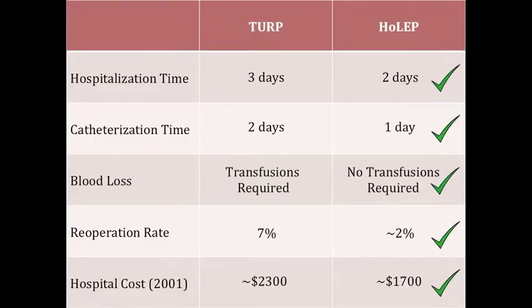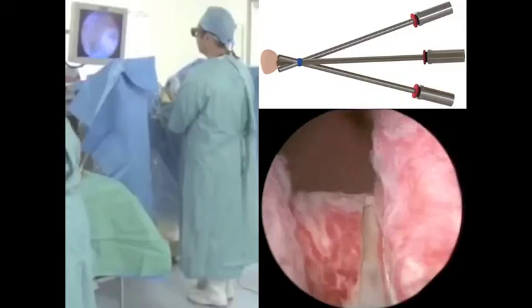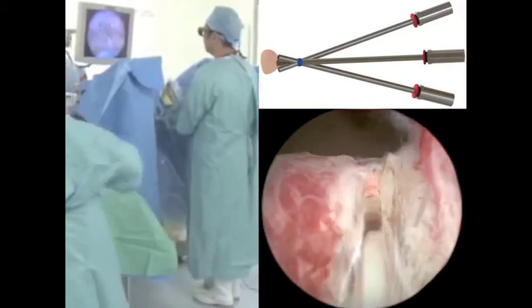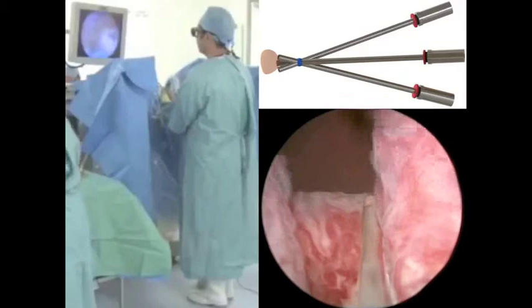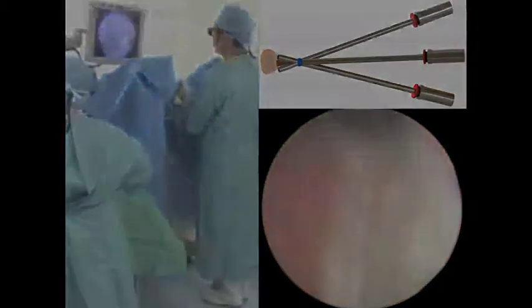Although HOLEP is clinically proven to be the superior procedure, it is very rarely done, while TURP is done on a regular basis. This is because there is a large learning curve in HOLEP. The surgeon lacks the ability to retract and cut tissue at the same time and operates through a center of motion very close to the target.